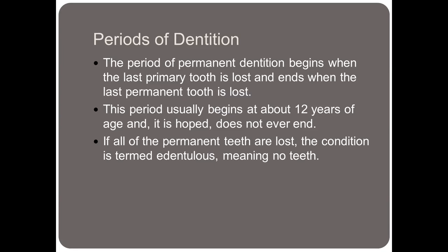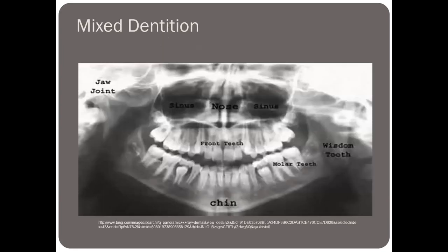If all the permanent teeth are lost, the condition is termed edentulous, meaning no teeth. This image shows an older person with only two retained deciduous teeth — the mandibular second premolars. Their first molars have erupted with root completion, and their second molars have erupted without root completion, suggesting an age of about 12 to 14 years. You can also see the tooth buds starting to form where the wisdom teeth will be.